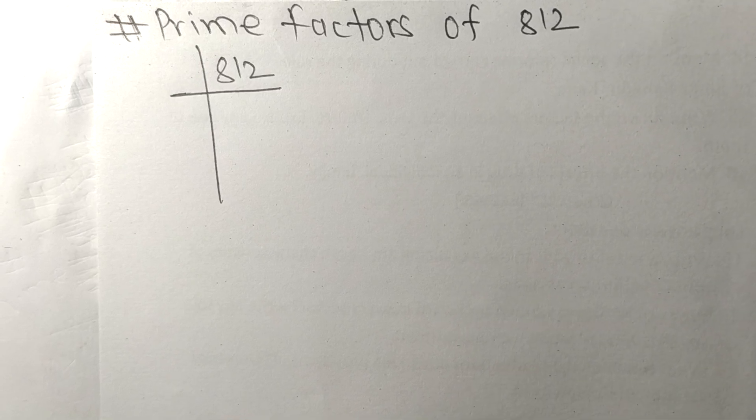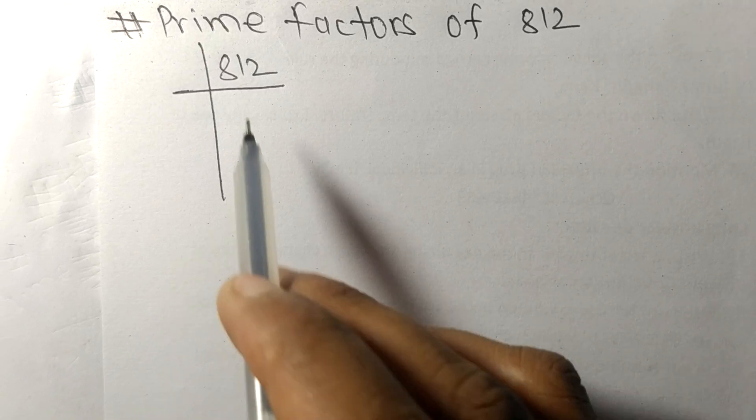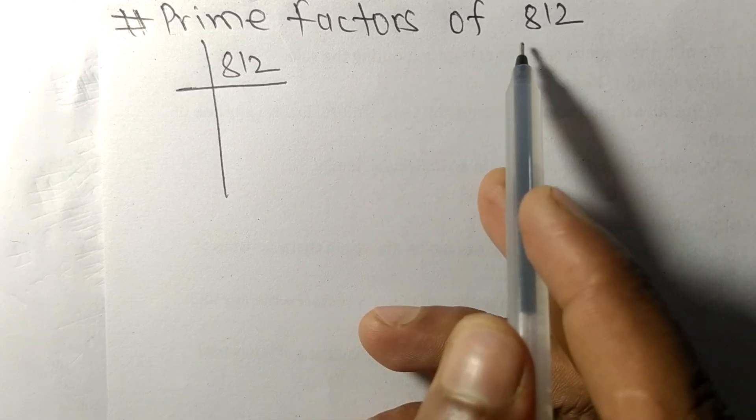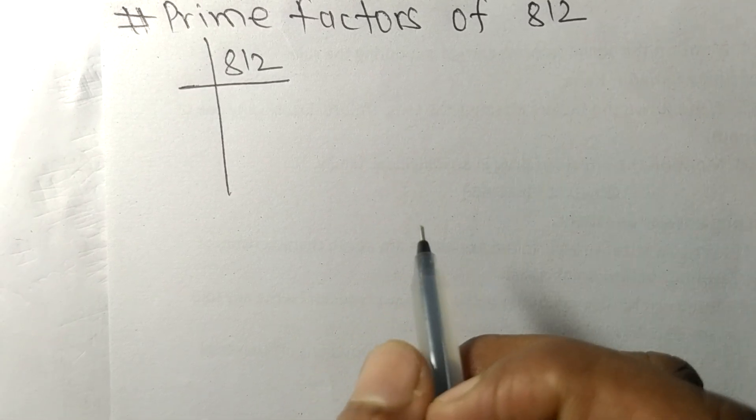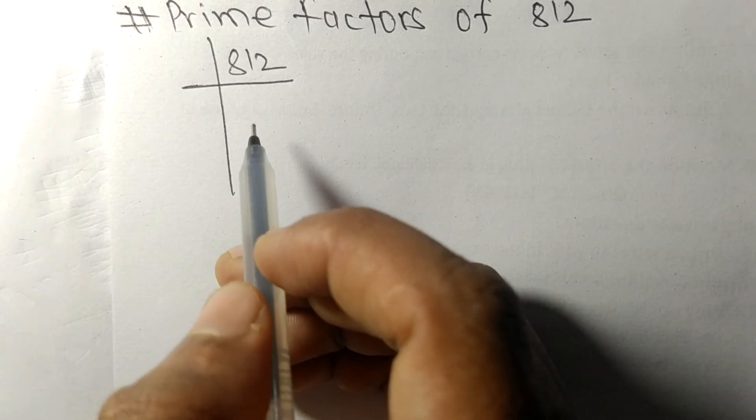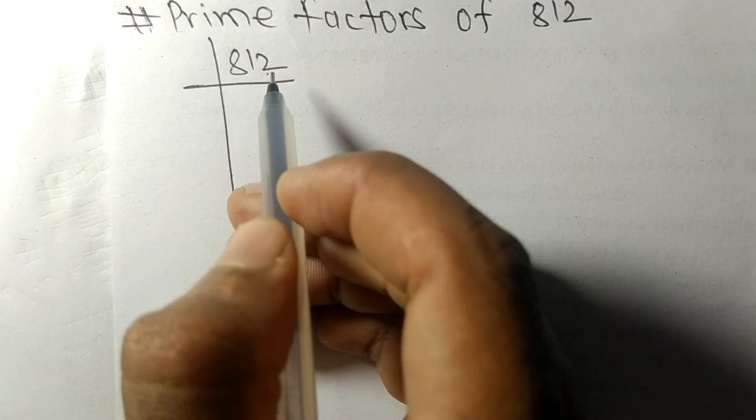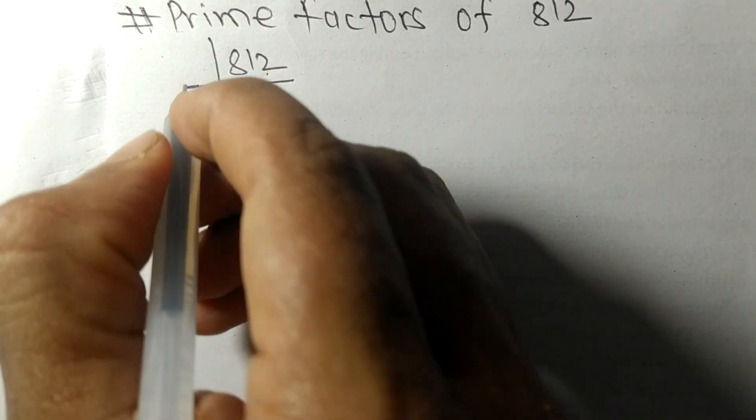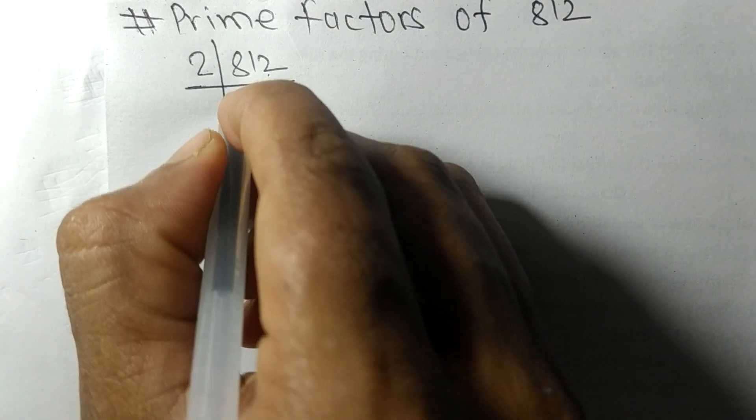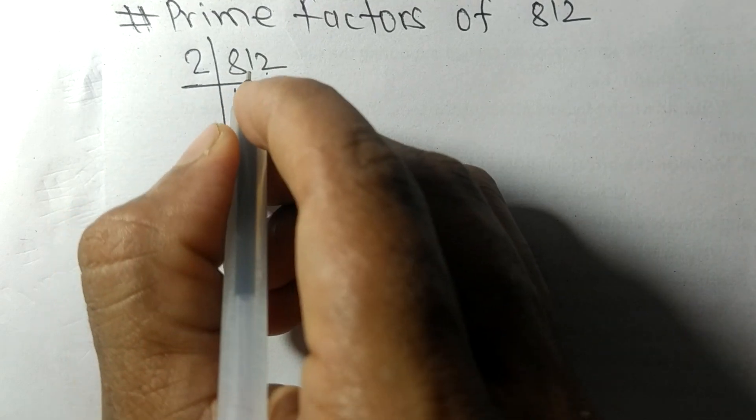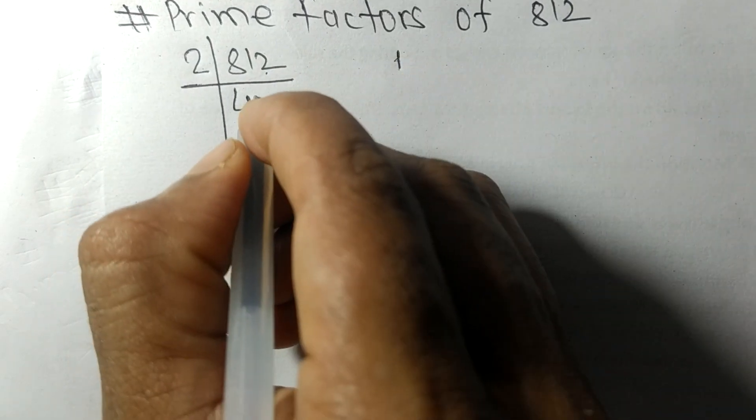Today in this video we shall learn to find the prime factors of 812. It contains an even number at the end, so it is divisible by 2. We divide 812 by 2: 2 times 4 is 8, 2 times 0 is 0, on subtracting we get 1, and then 12. 2 times 6 is 12.